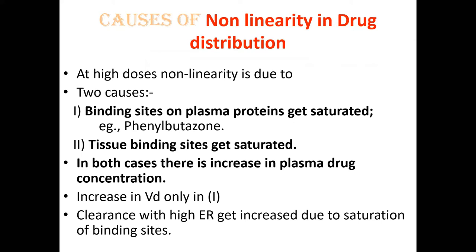In drug distribution, non-linearity may occur because binding sites on plasma proteins become saturated, as with phenylbutazone. Similarly, if tissue binding sites become saturated, non-linearity in drug distribution is observed. In both cases, an increase in plasma drug concentration is seen, while in the first case an increase in Vd (volume of distribution) is also seen, and clearance increases due to saturation of binding sites.